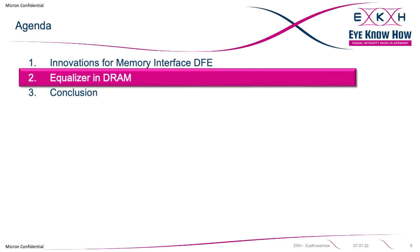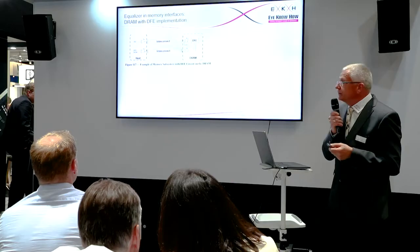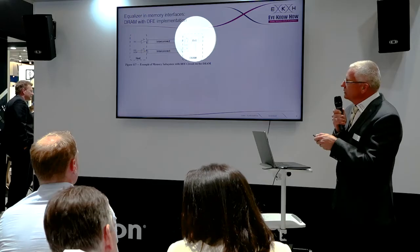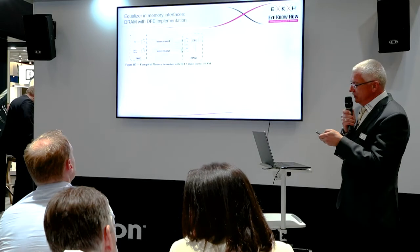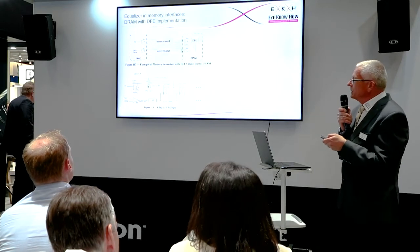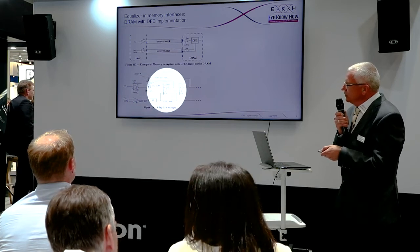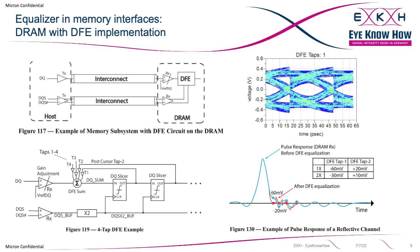Looking at the implementation inside the DRAM: we have a DQ line with an interconnect and the DFE circuit. On the DQS circuit there is no DFE — the DQS just provides timing information about when a bit arrives to enable the DFE for the DQ interface. In more detail, the DQS signal triggers a slicer with some delay, bringing in the feedback from tap 1; the second bit brings in the signal from tap 2, and so on.